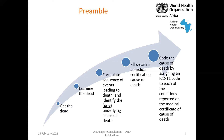You need to formulate a sequence of events leading to death and identify only one underlying cause of death. There can only be one underlying cause of death — not two, not three, only one. Then fill in the details in a medical certificate of cause of death, and after that, assign an international code. We'll be looking at ICD-11 coding in a separate training. Today, let us focus on medical certification of cause of death.